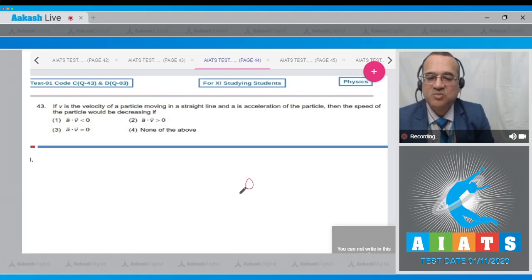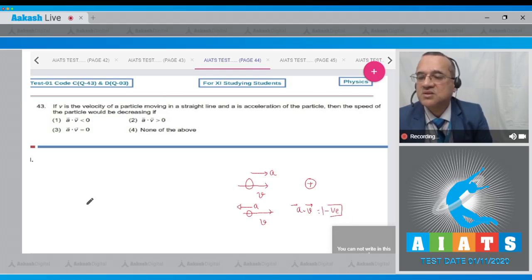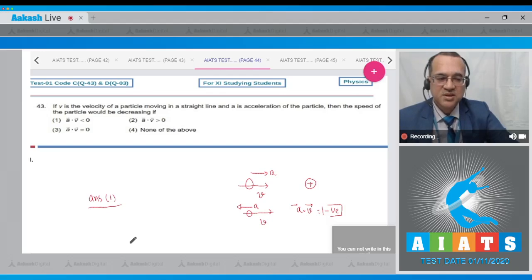If the particle is moving in this direction and particle has acceleration in this direction, then no doubt acceleration and velocity product will be positive. And if the particle is moving in this direction and acceleration in this direction, then the speed will decrease. The speed decreases when acceleration and velocity are in the opposite direction, and a·v becomes equal to negative. The correct option to this question is option number 1.